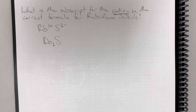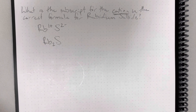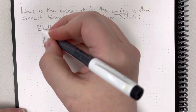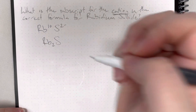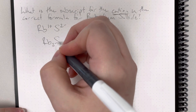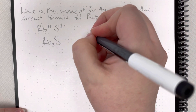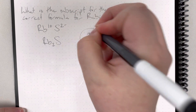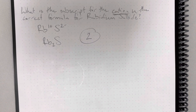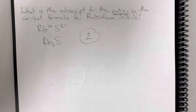The cation — remember, cat ions are positive — is my positively charged ion. Rubidium had that positive charge, so I'm looking for rubidium's subscript. Rubidium's subscript is 2, so the subscript for my cation in rubidium sulfide is 2.